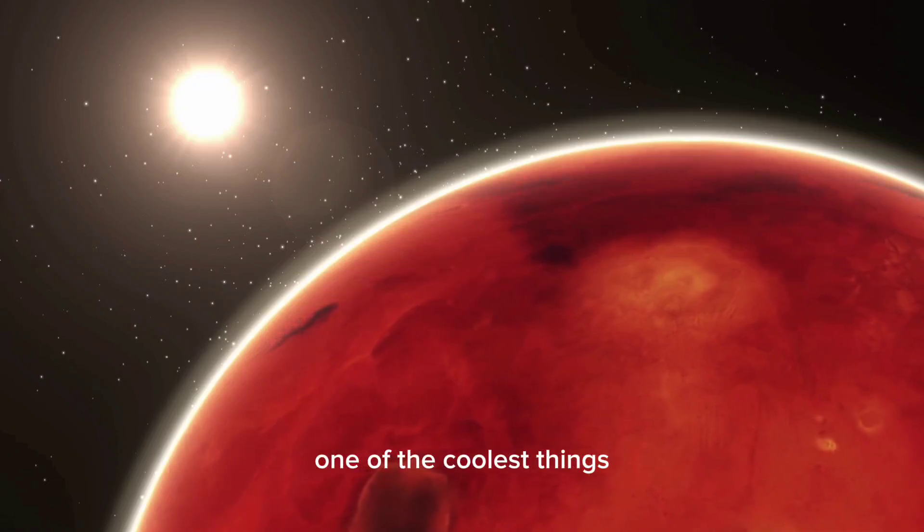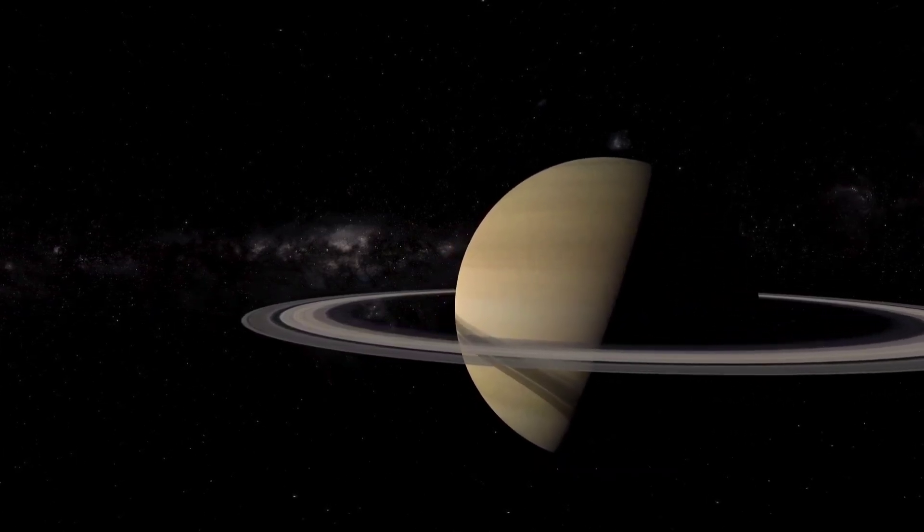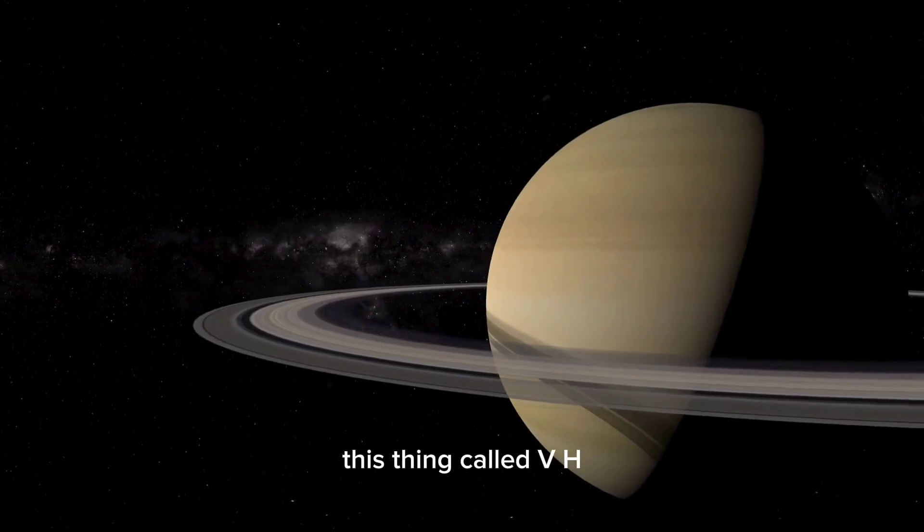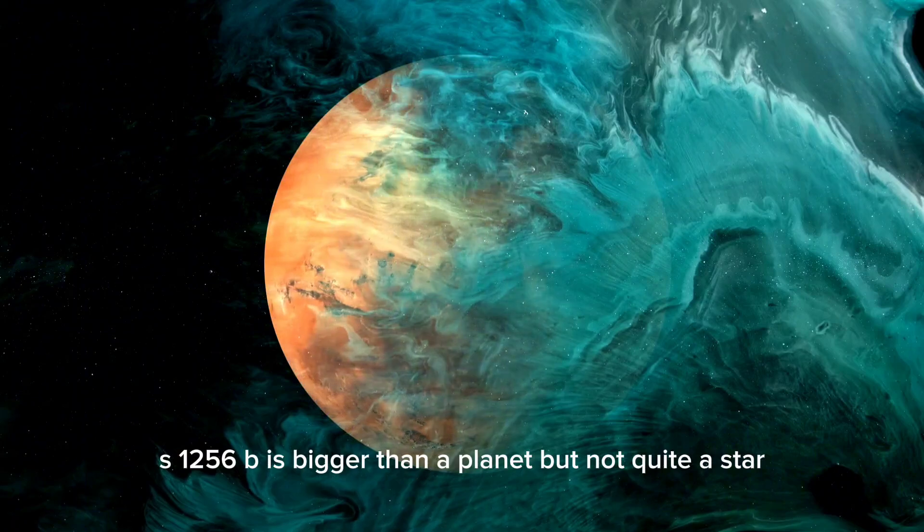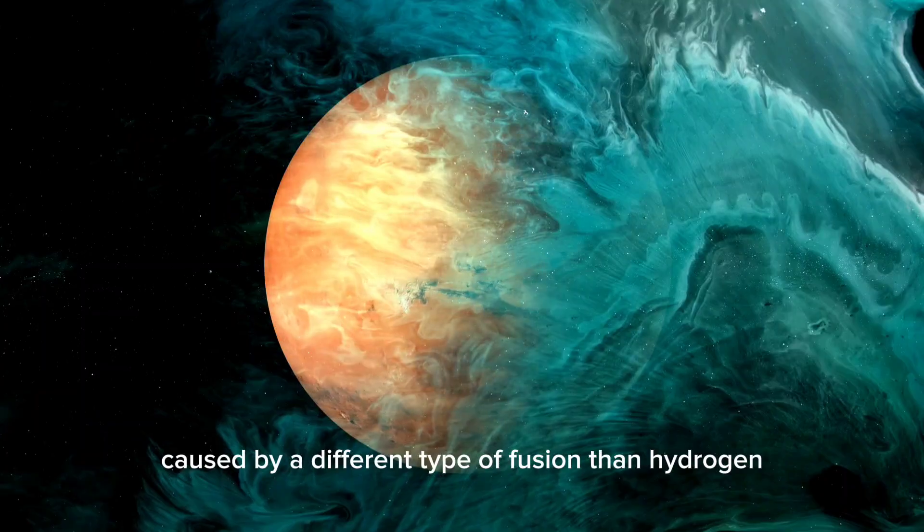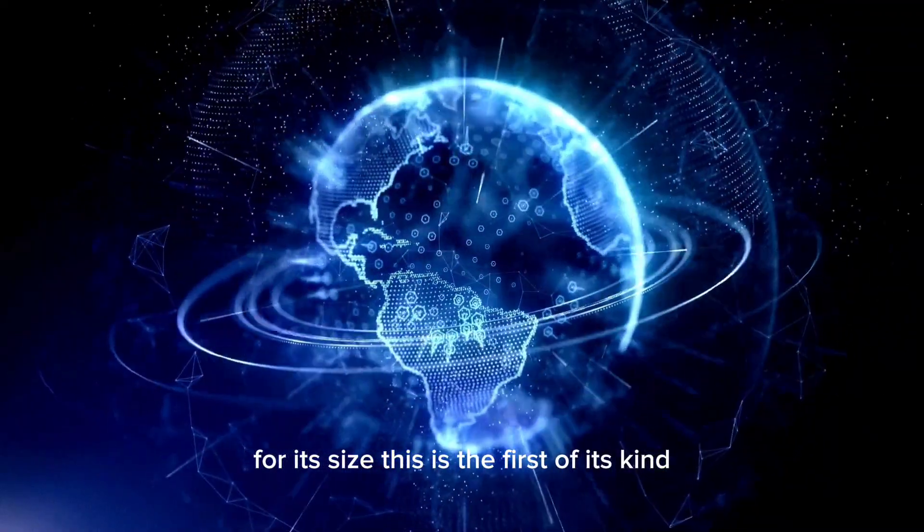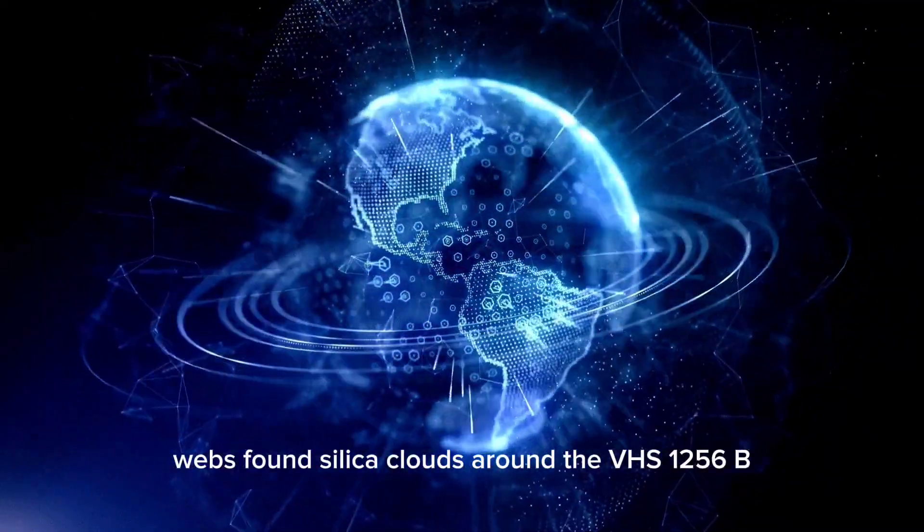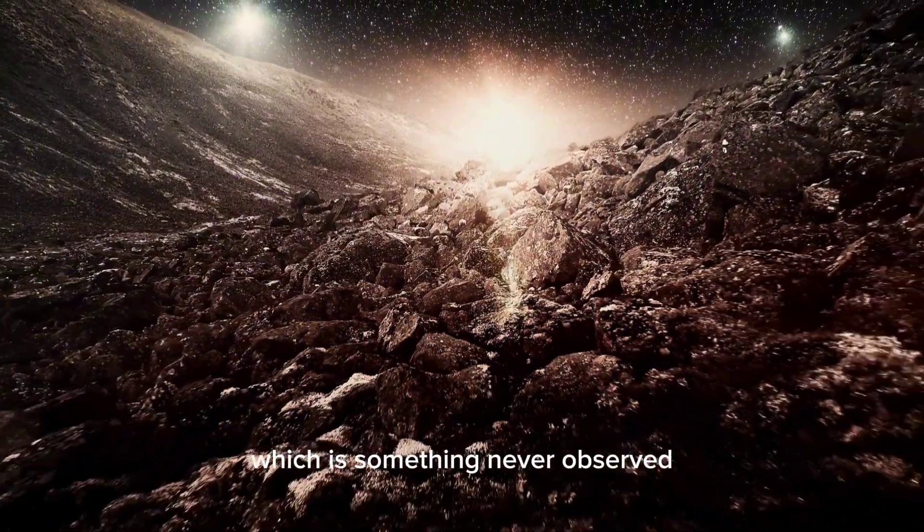One of the coolest things the James Webb Telescope has found is an exoplanet that's hard to classify. This thing, called VHS-1256b, is bigger than a planet but not quite a star. Webb's has shown us a faint reddish glow caused by a different type of fusion than hydrogen. For its size, this is the first of its kind. Webb's found silica clouds around the VHS-1256b, which is something never observed.